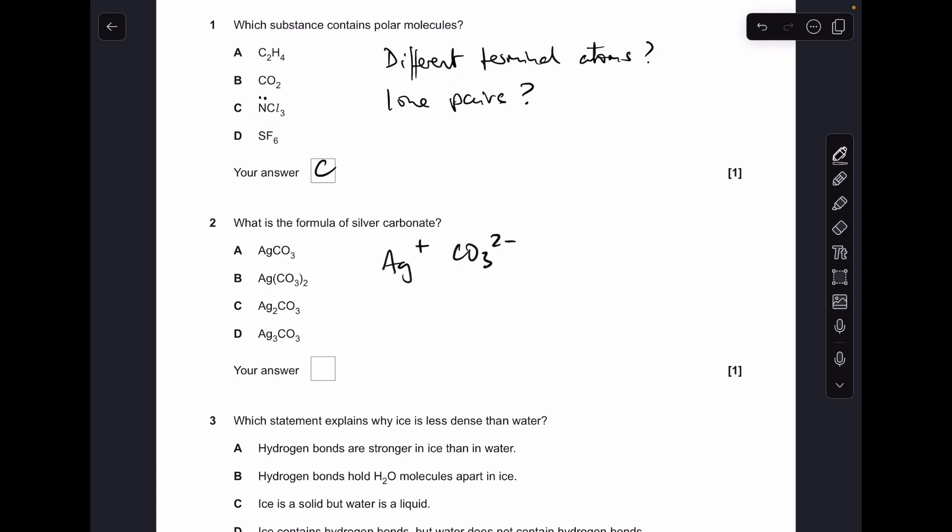Number two is just testing your knowledge of your ions. Silver ions have a one plus charge, carbonate ions are CO3 2-, and so therefore the ratio of ions is going to be Ag2CO3, so the answer was C.